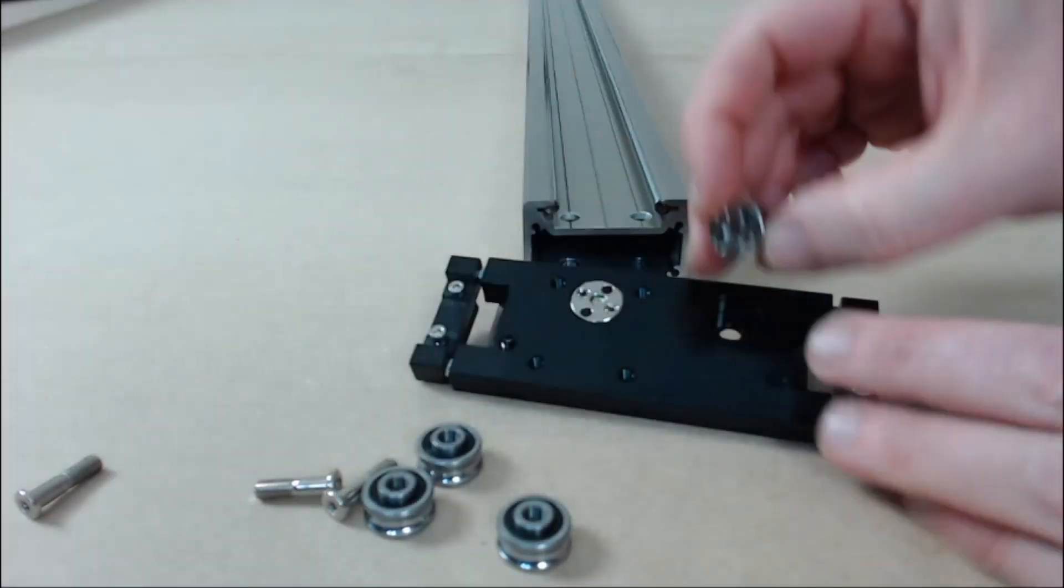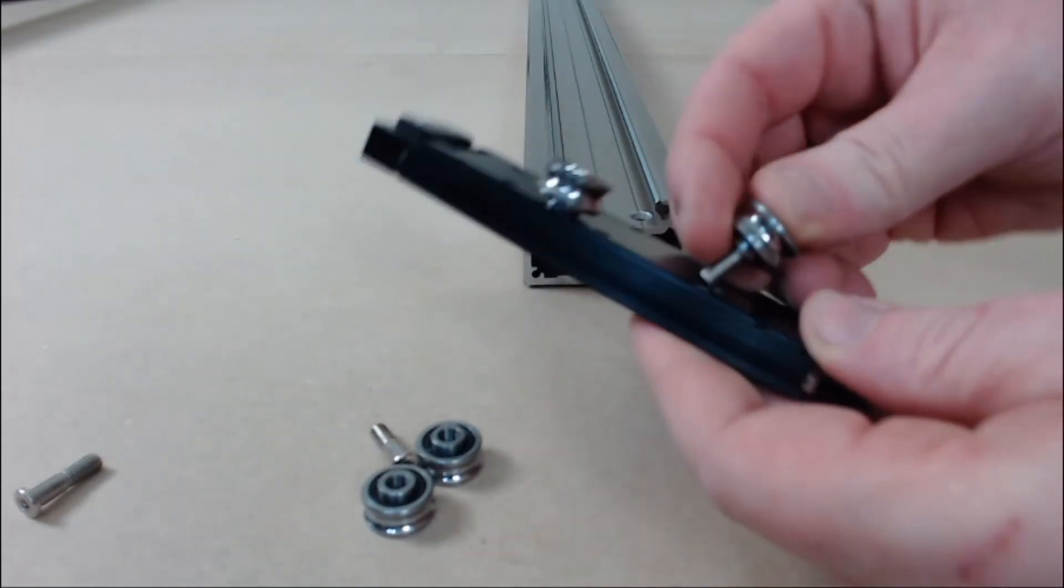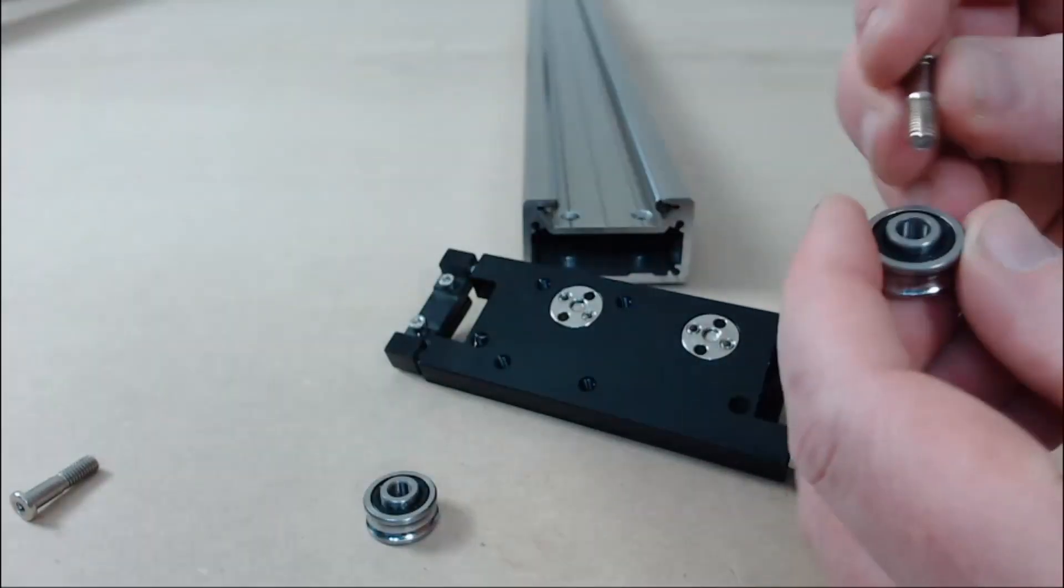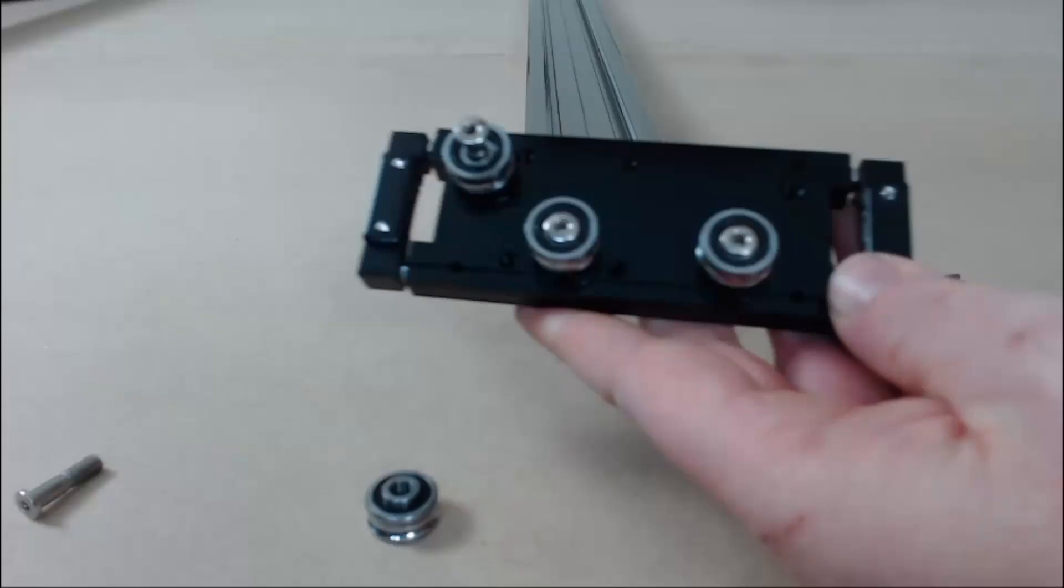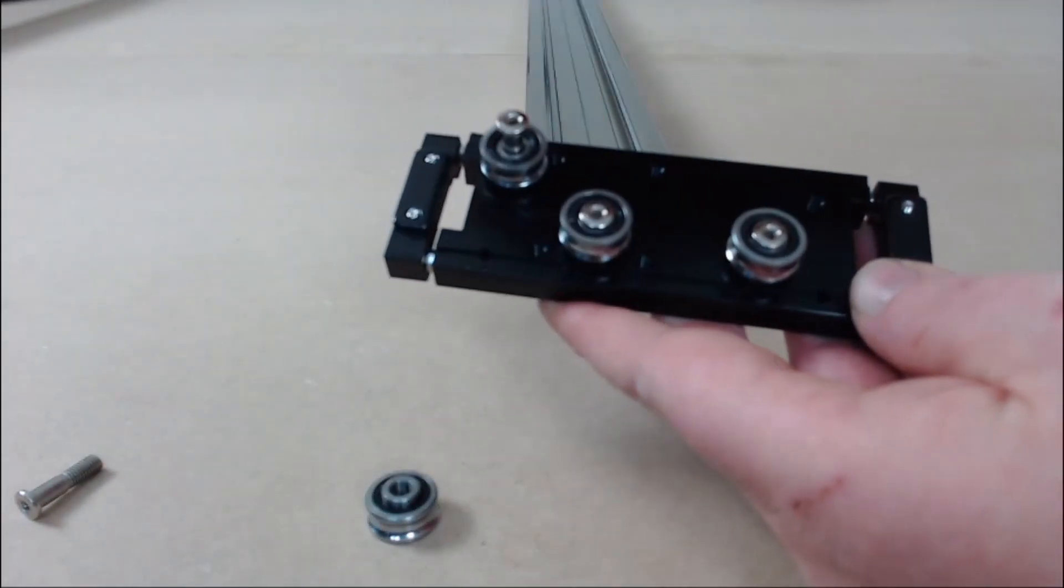Grab a bearing and a bolt and thread it into the cam nut. Repeat that for the other one with the cam nut on it. The last two bearings just get attached directly to the carriage. We go in the outside threads on the opposite side.